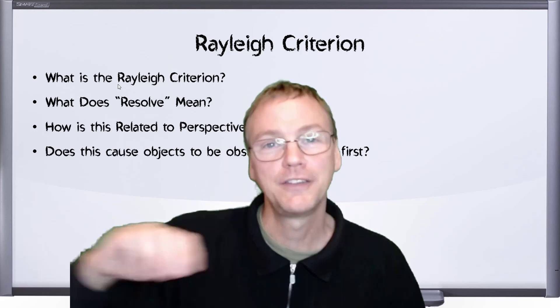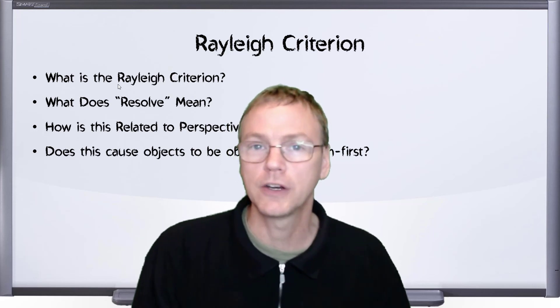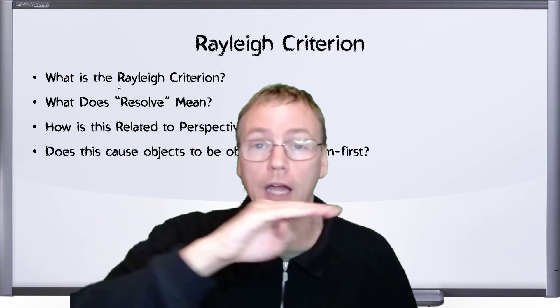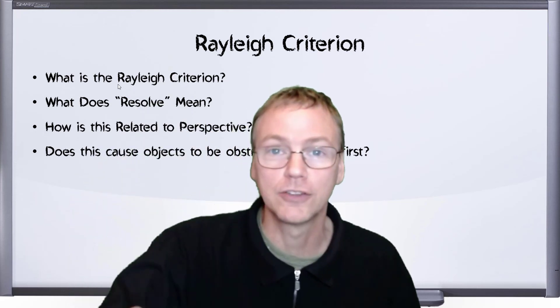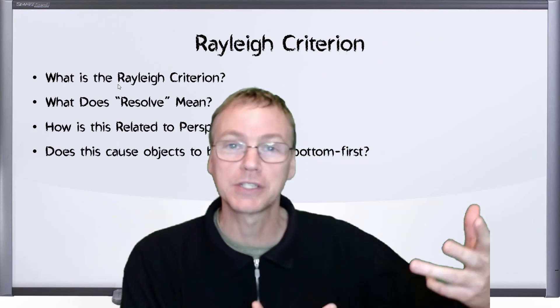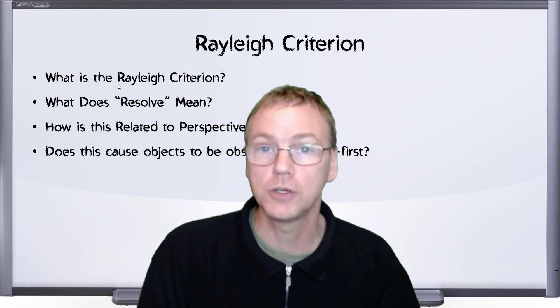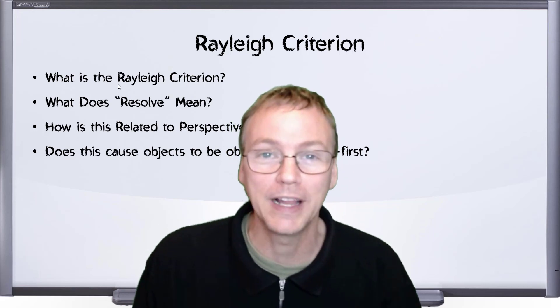In this fourth and final video, we'll investigate the claim that the Rayleigh Criterion explains why objects in the far distance disappear bottom first. Why do distant islands appear to sink into the ocean? Why do different ships seem to sail over a curve? Could it be due to the limited resolution caused by the Rayleigh Criterion?